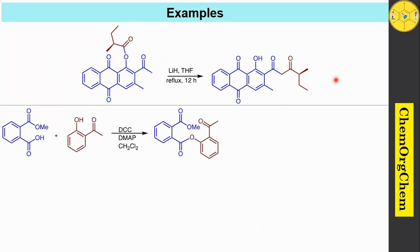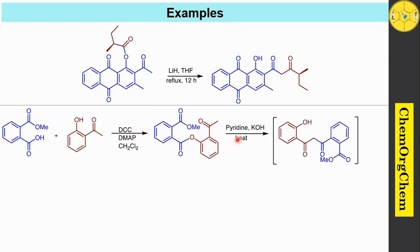Apart from this, in the Baker-Venkataraman rearrangement reaction, cyclization products are also sometimes observed. Here you see this benzoic acid derivative — when you treat it with this phenolic compound in the presence of DCC/DMAP conditions, it readily produces this coupling product. Then, followed by using pyridine and potassium hydroxide conditions, it readily undergoes rearrangement to produce this corresponding 1,3-dicarbonyl compound.